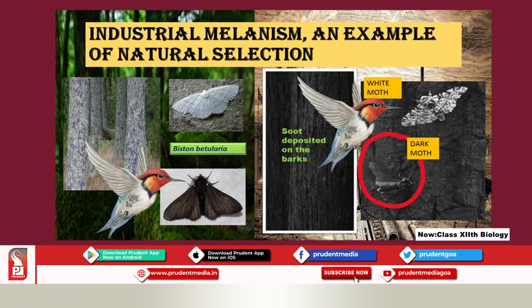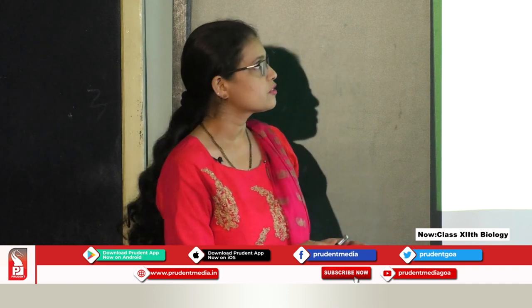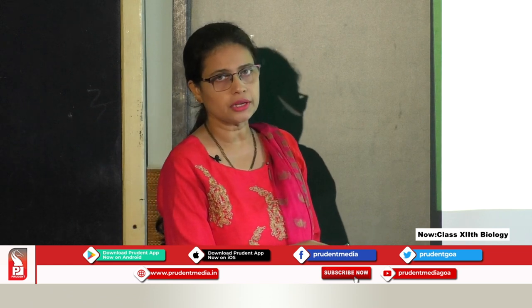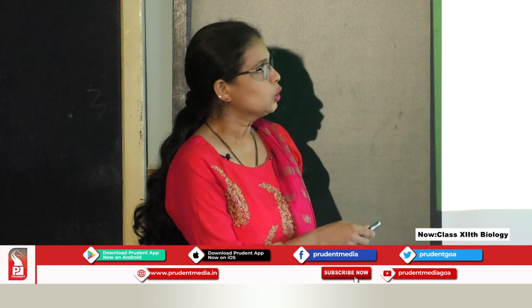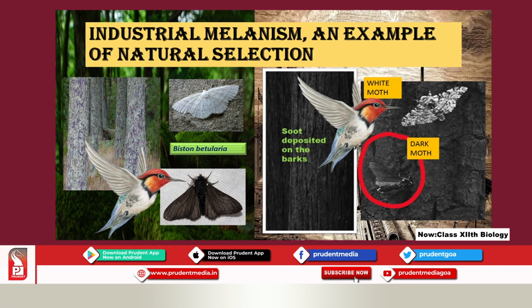Let us see one classic example of natural selection — industrial melanism. We are looking at the moth Biston betularia. There are two types: one is a dark variety and one is the light variety. The dark variety has melanin pigment deposition, whereas the white variety does not, but both belong to the same species, Biston betularia.